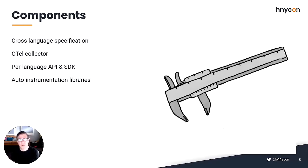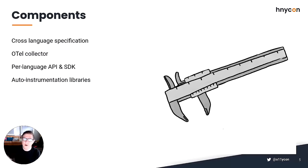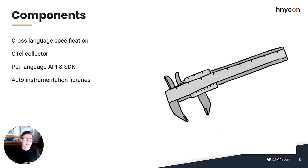OpenTelemetry is also a collection of per-language APIs and SDK libraries. OpenTelemetry has a community of people from different language backgrounds working on making sure it works consistently with Java, C#, Ruby, .NET, Python, and more. OpenTelemetry also includes auto-instrumentation libraries that you can just plug into your code — the lowest-effort way to start getting useful data about your systems right away. The hope is that you can drop something into your application and start using an observability tool immediately.